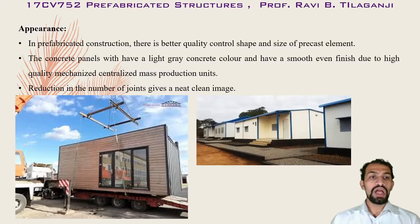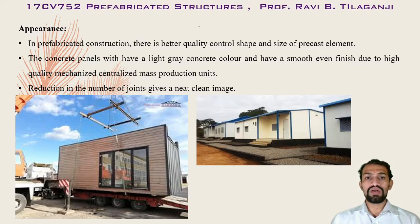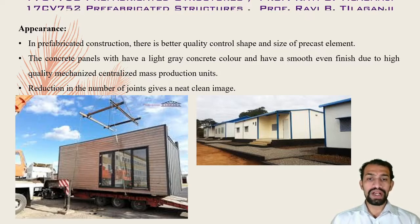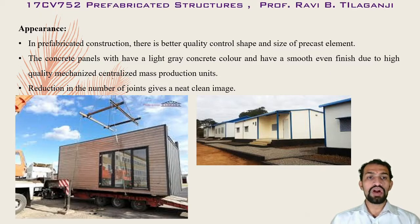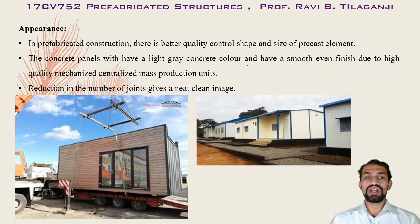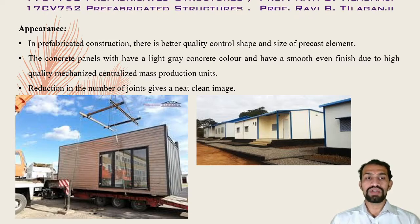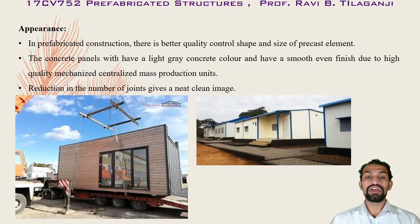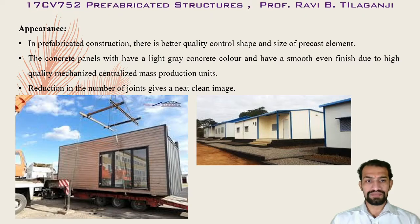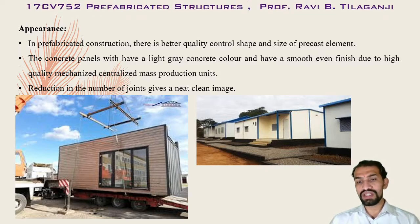Regarding appearance, prefabricated structures offer better quality control in shape and size of precast elements. The concrete panel will have a light gray color and a smooth, even finish due to high-quality mechanized centralized mass production units. This centralized mass production gives us small uniform gray color units with better quality control.